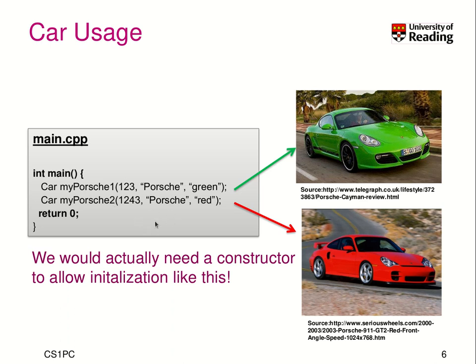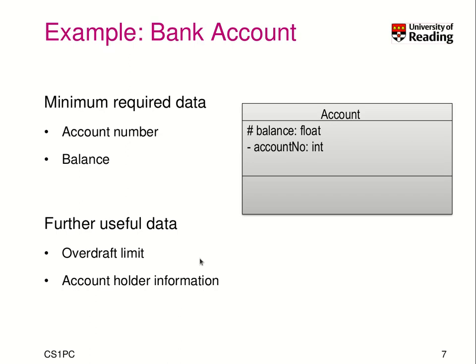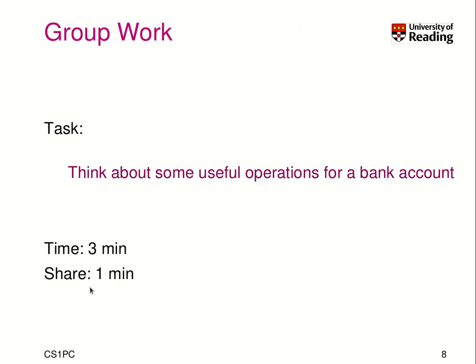We did not look initially at the constructors, but we will do that as part of this lecture today. Here is an example for a bank account. What do we need to model a bank account? Well, a bank account has maybe an account number — it has to be identified. And the bank account certainly has a balance, which is the amount of money you currently have deposited. You may also need additional data, such as the overdraft limit and information about the account holder. The question is: what kind of operations could be useful for a bank account to specify its behavior?